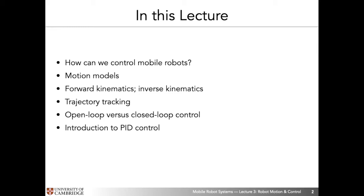In this lecture, we will talk about the methods that allow us to control mobile robots. To understand those methods, we will go through a couple of key concepts. The first concepts are motion models. Understanding motion models will allow us to understand forward and inverse kinematics, which will in turn allow us to do trajectory tracking. We'll look at open loop versus closed loop control, and at the very end I will cover PID control, one of the most sophisticated ways of executing closed loop control on robotic platforms.